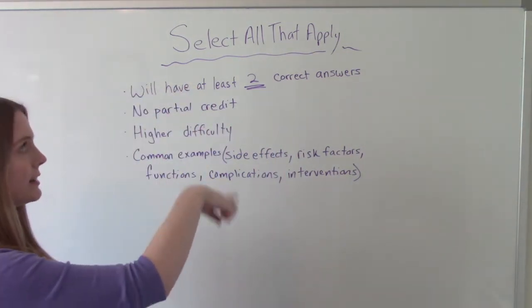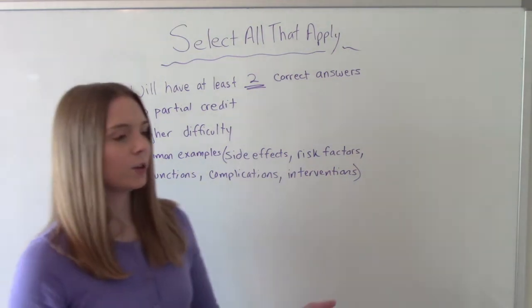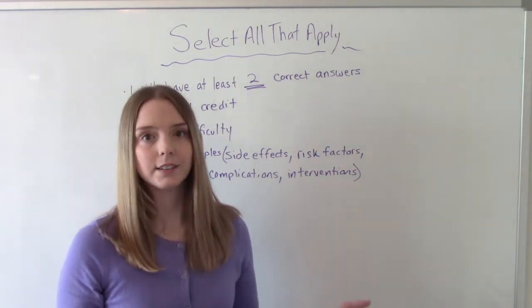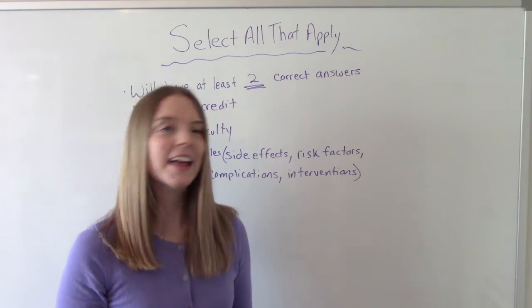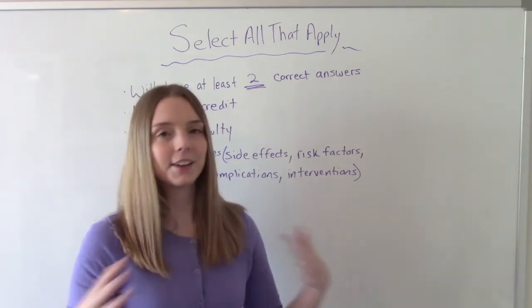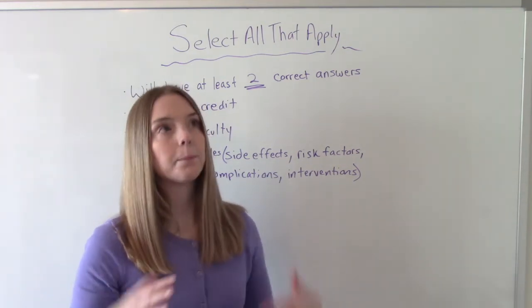No partial credit is given. So let's say you get three out of the four choices. You almost get it right, okay? You get the question wrong still. It's still a zero. You don't get credit for getting part of it right.